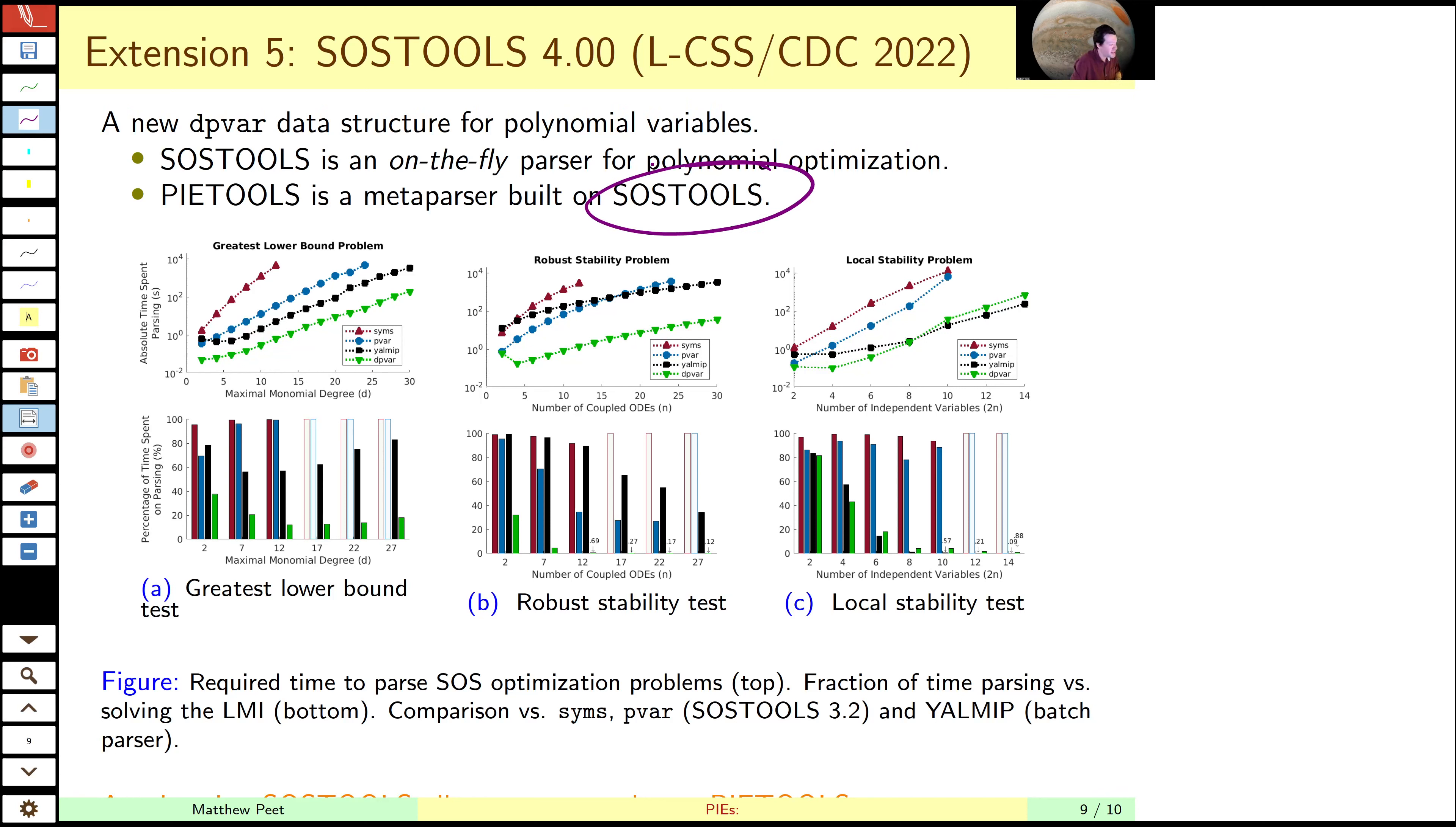That started out as SIMS, which is integrated into MATLAB, updated in 3.0 to PVAR. And now we've included a new data structure which allows us to efficiently exploit the structure of the decision variables and reduce the parsing times.